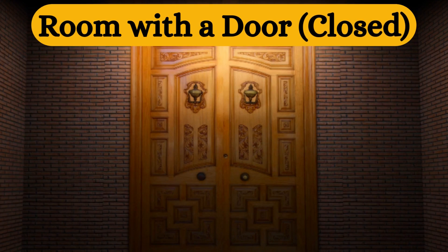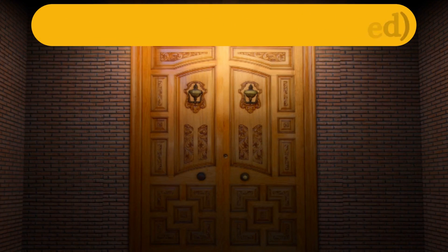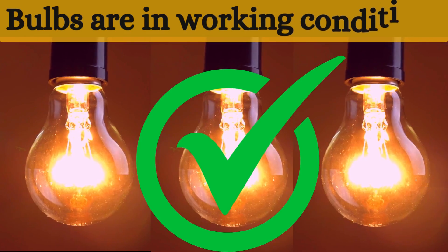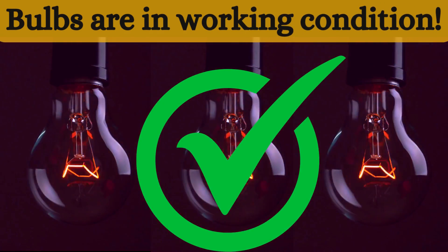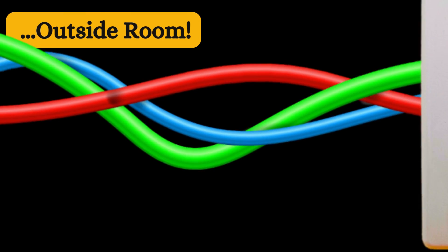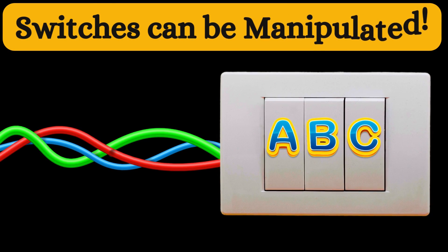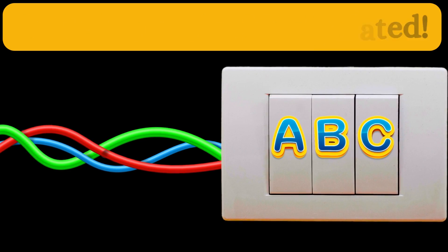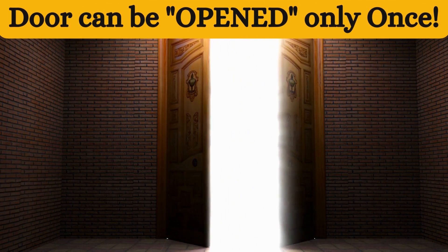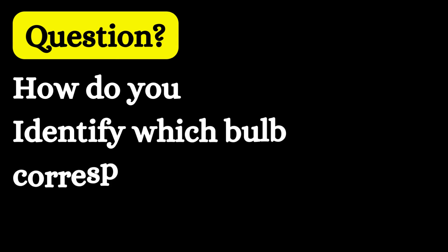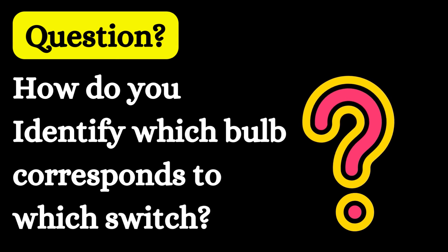There is a room with the door closed, and there are three bulbs inside the room. All the bulbs are in working condition. Outside the room there are three switches connected to the bulbs. You can manipulate the switches as you wish, but once you open the door you cannot manipulate the switches. The question is: how do you identify which bulb corresponds to which switch?